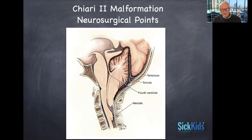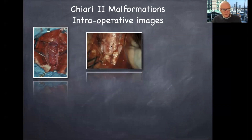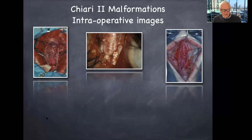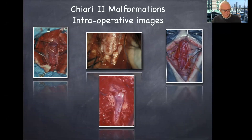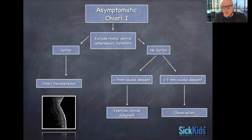Taking off the posterior cervical lamina is important. These are some intraoperative images of Chiari 2 malformation showing what it looks like in the days when we did a lot of these decompressions. It's becoming less and less common nowadays to have to do Chiari 2 decompression procedures, and it's quite a bit different than the Chiari 1 that I demonstrated.